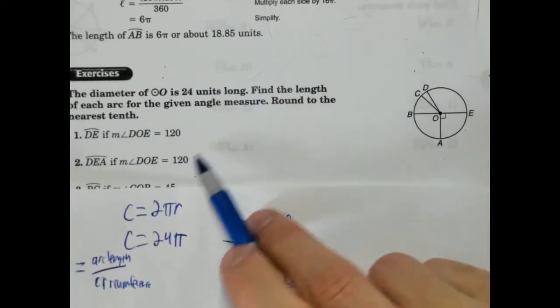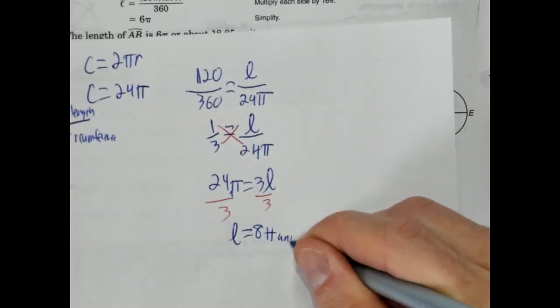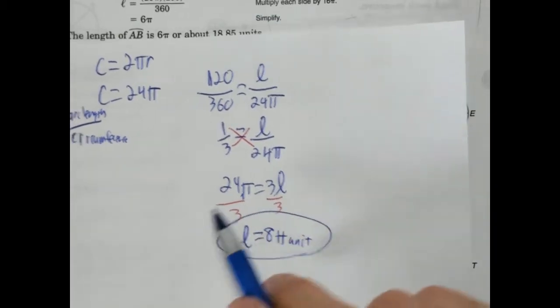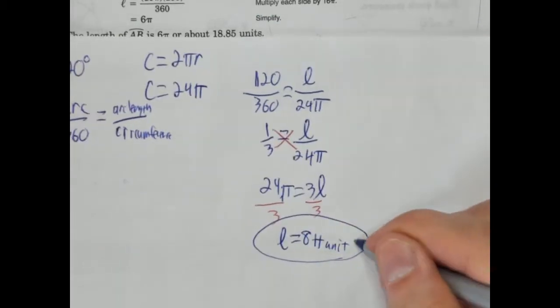And the arc length should equal 8 pi. Now, do we have units of measurement here? We don't. We just have units. So that would be the answer for number one, 8 pi units. I'll put that right here.